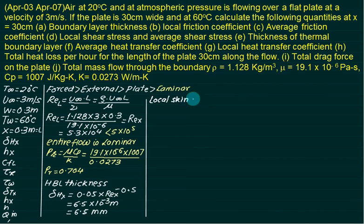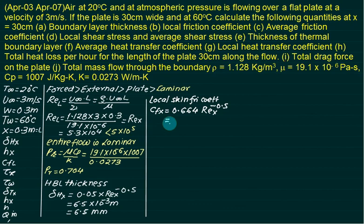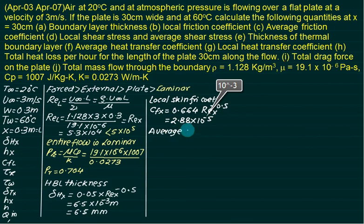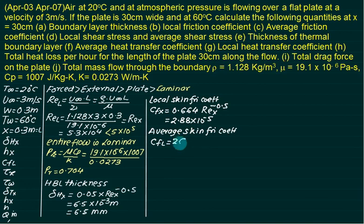The local skin friction coefficient is given by C_fx = 0.664·Re_x^(−0.5). Substituting Re_x = 5.3×10⁴ gives C_fx = 2.8×10⁻³. In laminar flow, the average value is exactly double the local value, so C_fl = 2·C_fx = 5.76×10⁻³.